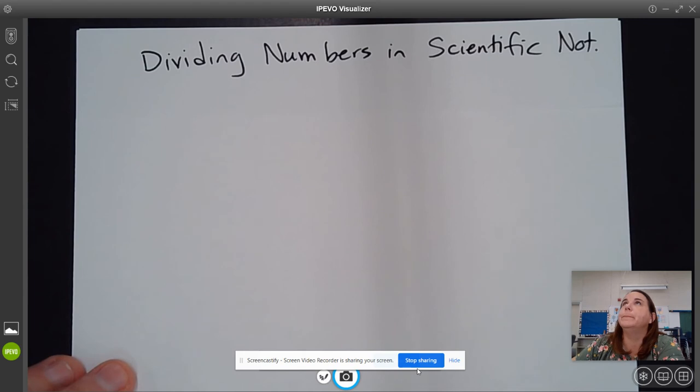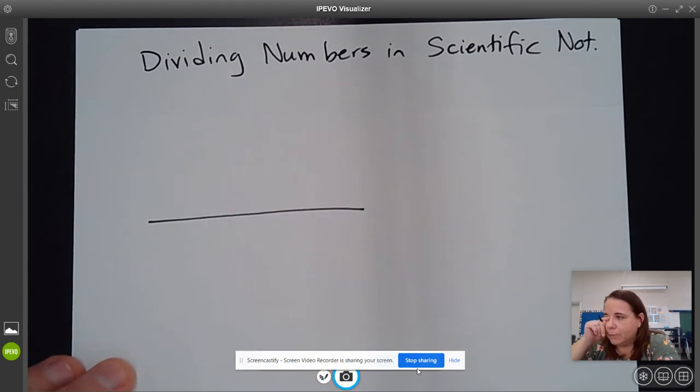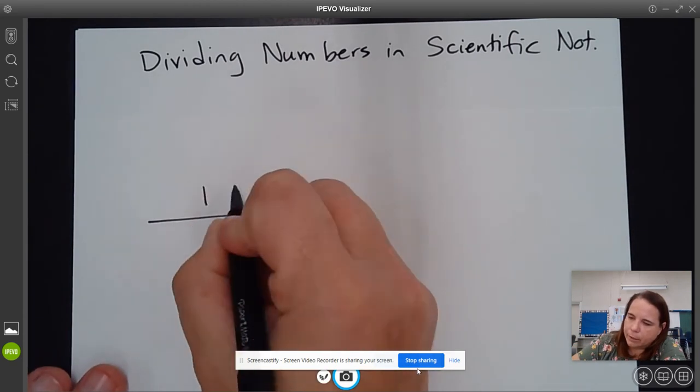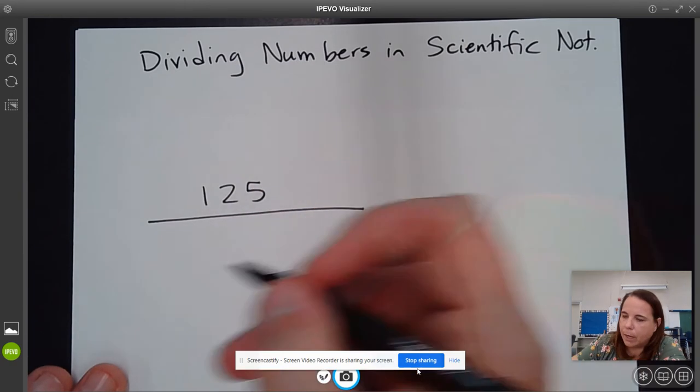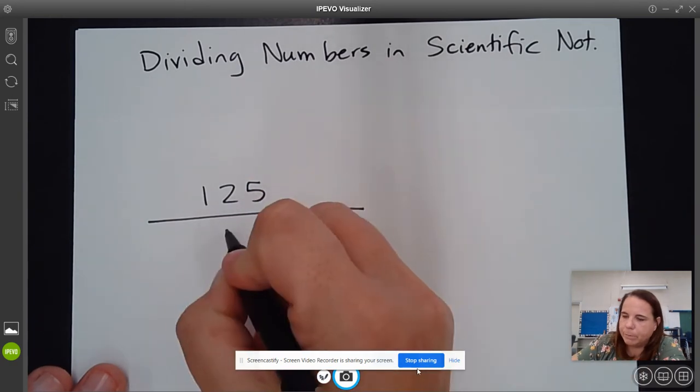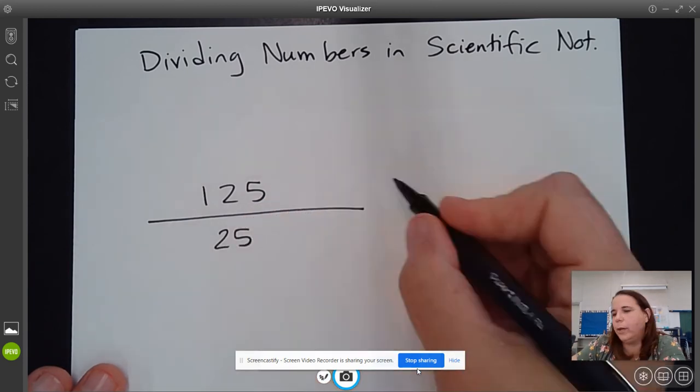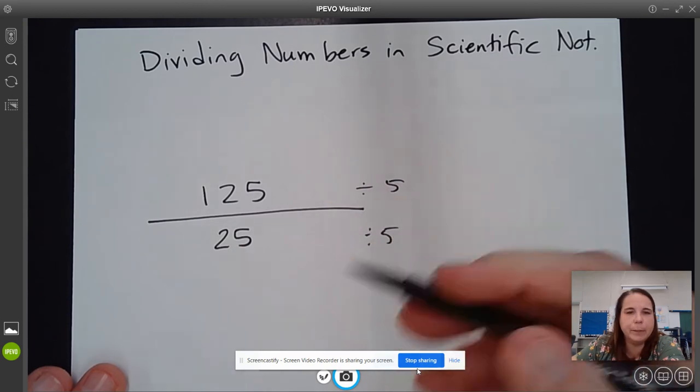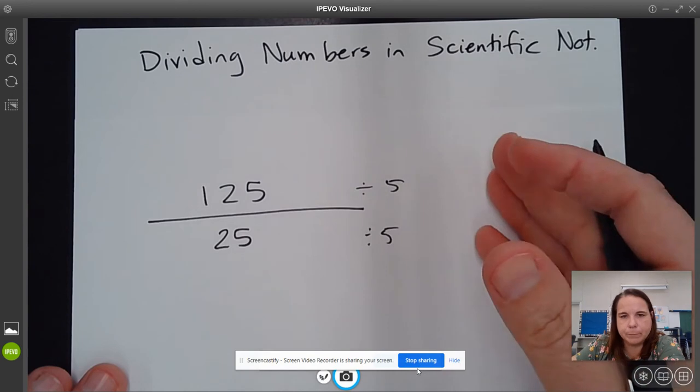So let's say we have a number like 125 and we're going to divide this by 25. You guys know that we could divide like this by 5 and this by 5, right? We could simplify it by dividing both the top and the bottom by the same number.